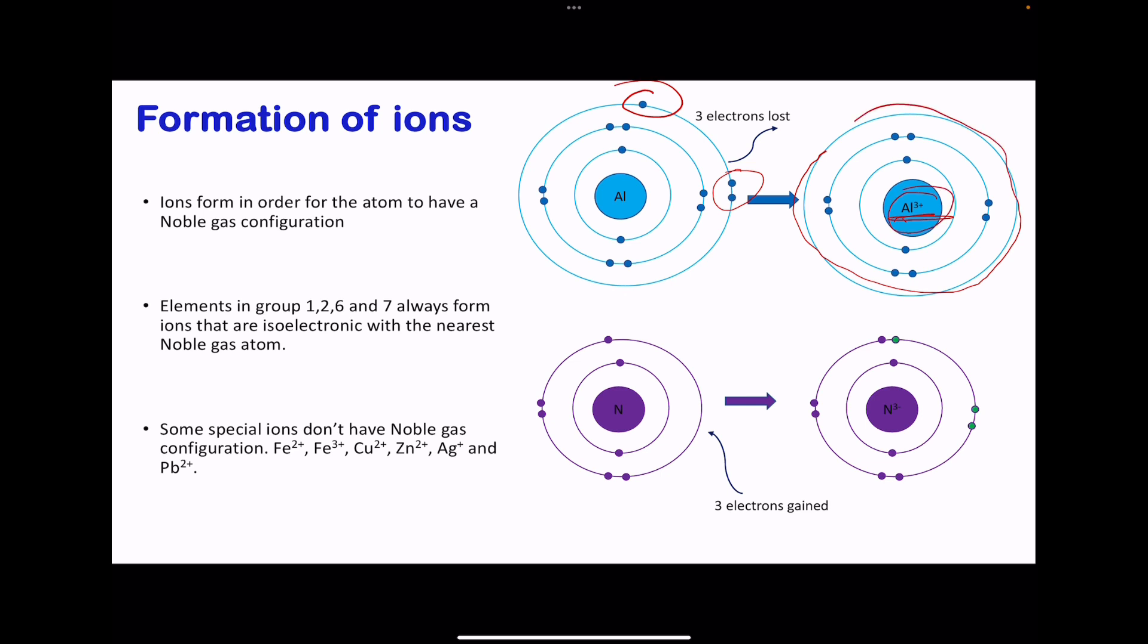On the other hand we see nitrogen. Nitrogen has 1, 2, 3, 4, 5 electrons in the outer shell. It's going to gain 3 electrons in order to obtain a noble gas configuration, and these electrons gained are here. So it's going to be N3-.